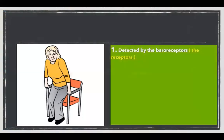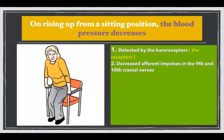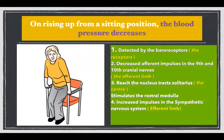When one stands from a sitting position, the blood pressure decreases because there is pooling of blood in the lower limbs. Baroreceptor firing occurs and there are decreased efferent impulses in the 9th and 10th cranial nerves, which reach the nucleus tractus solitarius. The nucleus tractus solitarius recognizes that blood pressure has decreased, stimulates the rostral medulla, which in turn stimulates the sympathetic nervous system to restore blood pressure back towards normal.